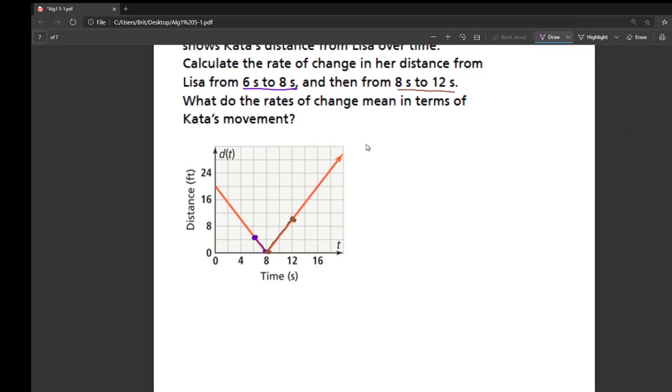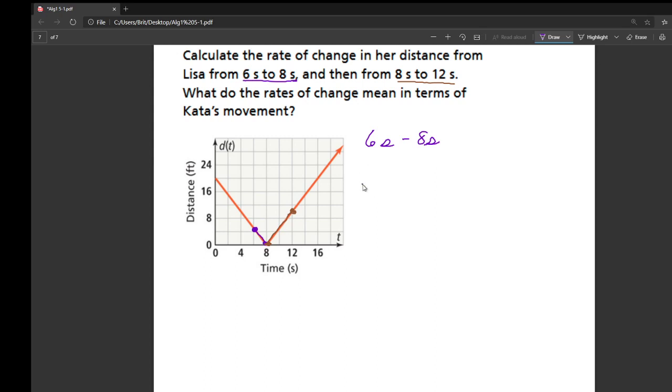So first, I'm going to do from the six seconds to eight seconds. Again, we need to use our slope formula. So I'm going to calculate my change in Y values. First, I'm going to write some ordered pairs out here. Each of these is counting by two. So this is at 6, comma, and these ones are counting by fours. So this is at 6, 4, and then 8, 0.